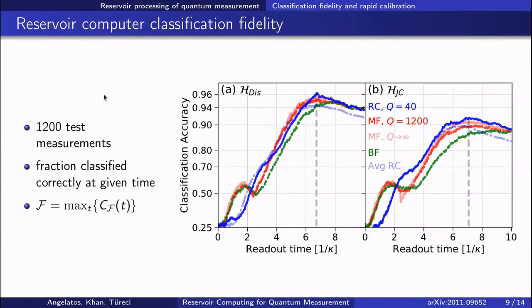To be more quantitative, we can evaluate the performance of this reservoir computer on a set of 1,200 test measurements, where here I plot the fraction of signals classified correctly as a function of measurement time for both initial readout systems. It's important to note that in both the dispersive and Jaynes-Cummings models, crosstalk and decay impose a ceiling on classification accuracy, which decays with time.